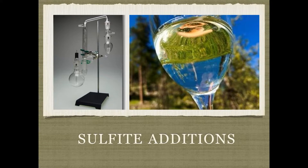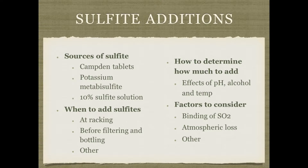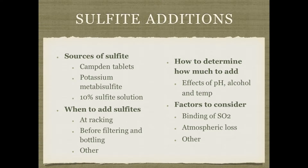When adding sulfites to your mead, there are different sources to use, including Campden tablets, bulk potassium metabisulfite powder, or a 10% sulfite solution. Different times to consider adding sulfites include at racking, before filtering or bottling, or at other times. There are ways to calculate how much to add, with primary effects from pH and some from alcohol and temperature. Other important factors include binding of sulfites and atmospheric loss over time.